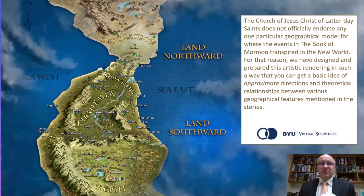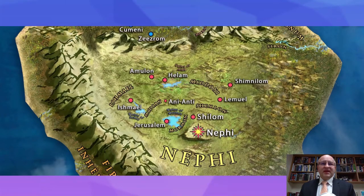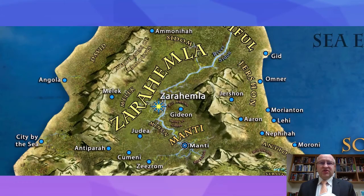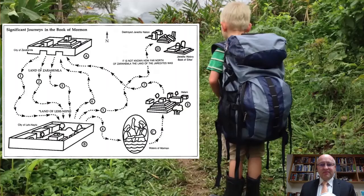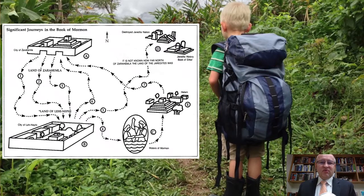Back to the virtual scriptures — in it, you'll find great resources to show you where these cities are in relation to each other. You'll see the land of Zarahemla; it's great to map out some of these journeys. A second way is a simple little map from the Church's curriculum showing how the journeys went with the significant ones in the Book of Mosiah.